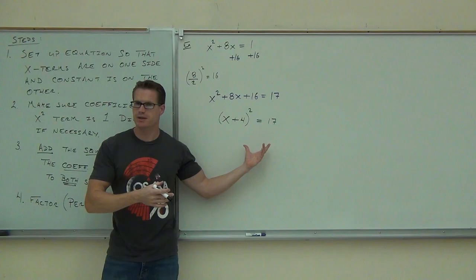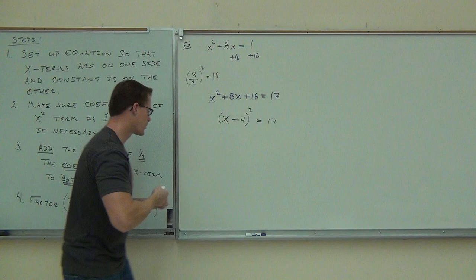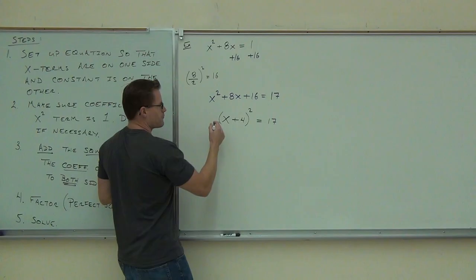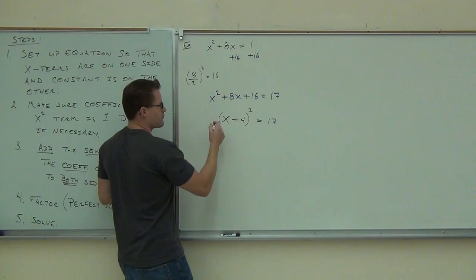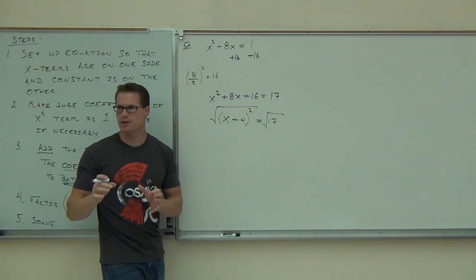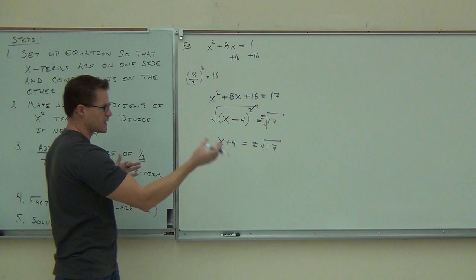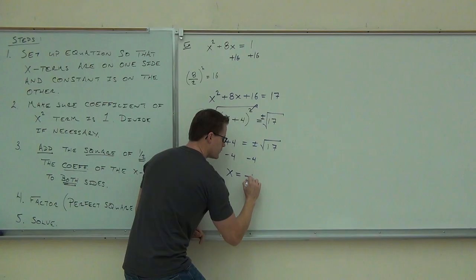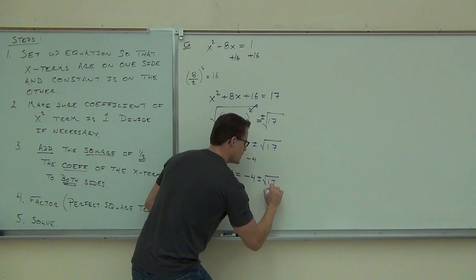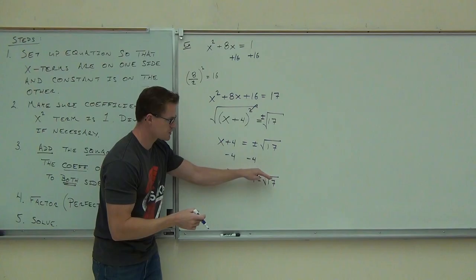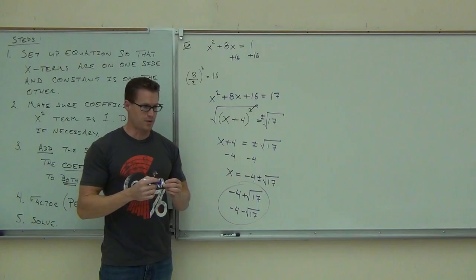Once you factor, you have something squared equals a number — exactly what we conquered at the beginning of this section. Step five: solve just like before. Take a square root of both sides, include plus or minus. We get x plus 4 equals plus or minus root 17. Subtract 4 from both sides: x equals negative 4 plus or minus root 17.